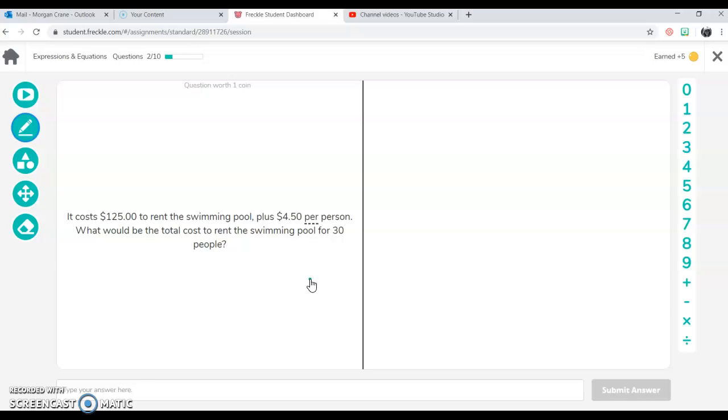So this is where you have to kind of make your own expression. So we're going to highlight what's important. So $125 starting to rent it. Then you also plus, that's important, $4.50 per person. So here's where our original problem is going to kind of look like. We have $125 and it says plus $4.50. So that's $4.50 per person. So I'm going to use P as my variable to show my problem. So there's my expression.